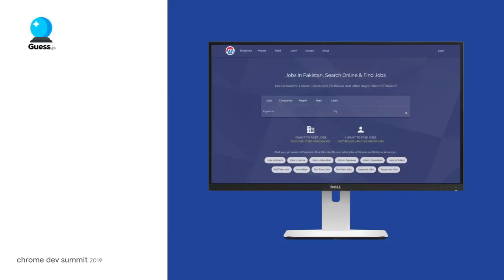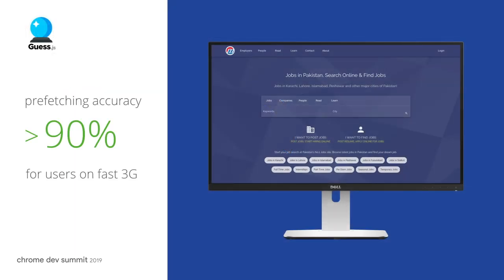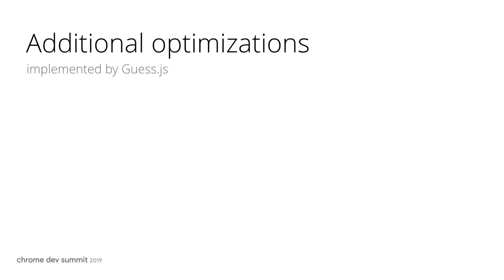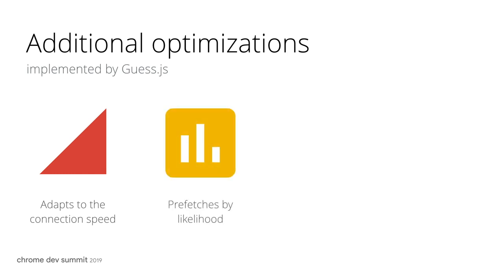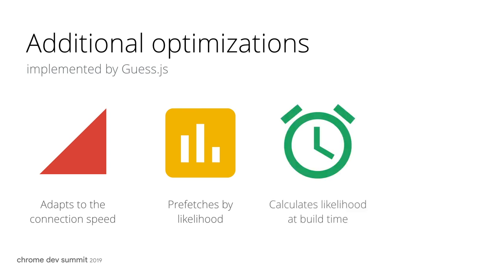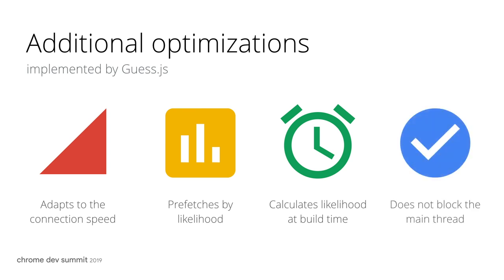The prefetching of Guess.js comes with over 90% accuracy. Combined with prefetching on mouse over, it can provide instant experiences for all users while saving their data. Additionally, Guess.js adapts its prefetching algorithm to the user's connection speed — performing more aggressive prefetching for users on fast networks and less aggressive for users on slower networks. It prefetches individual JavaScript chunks depending on their likelihood to be used, calculates probabilities at build time to reduce payload to the minimum, and does not block the main thread since it performs prefetching only when the browser is idle.